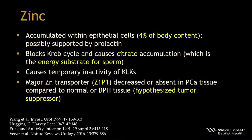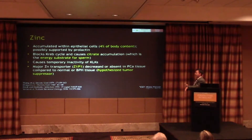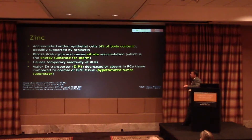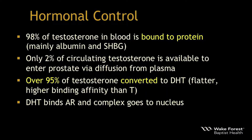Zinc gets a lot of attention, particularly in fertility. It accumulates within the epithelial cells of the prostate — four percent of total body content is located here — possibly supported by prolactin stimulation. It blocks the Krebs cycle and causes citrate accumulation, which sperm need for energy, and it causes temporary inactivity of the kallikreins. The major transporter ZnT1 (ZIP1) is either decreased or absent in prostate cancer tissue compared to normal or BPH tissue, and has been hypothesized as a tumor suppressor.